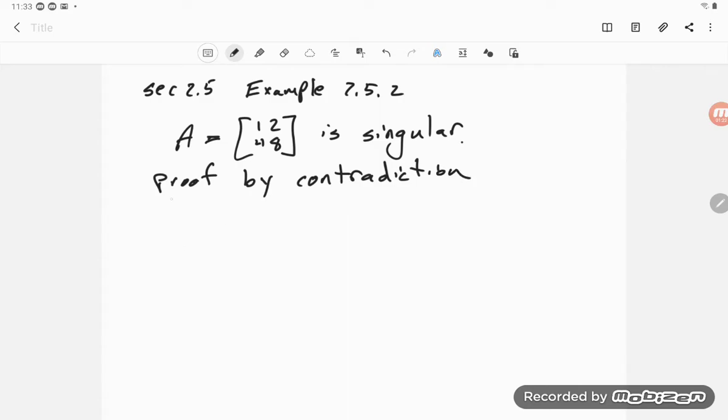They're going to assume, or suppose, B equals a b c d is A inverse. In their example they say an inverse of A, but we know they're unique so I'm just going to say is A inverse.